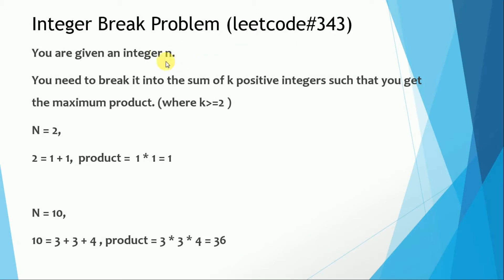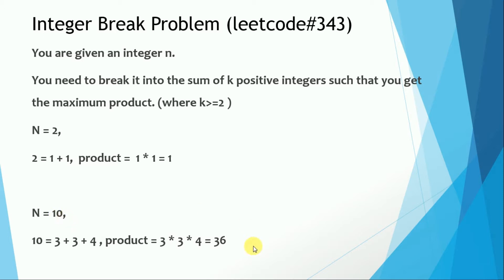You are given an integer n. You need to break this integer into k positive integers the product of which comes out maximum. When n is equal to 2, you can only break it into 1 and 1, and the product comes out as 1. When n is equal to 10, if you break it into 3, 3, and 4, then you get the product as 36, which is what we need to find out.